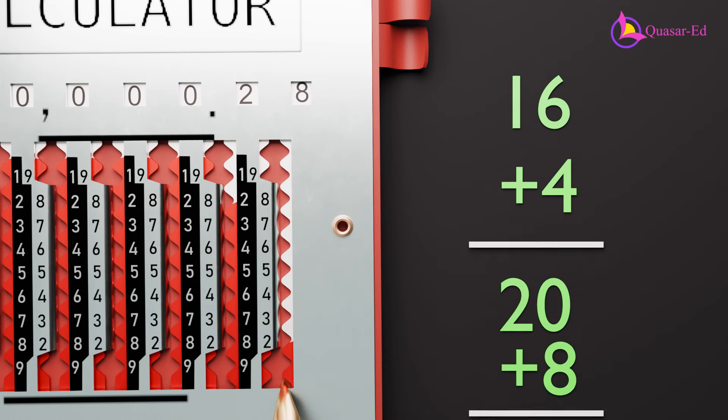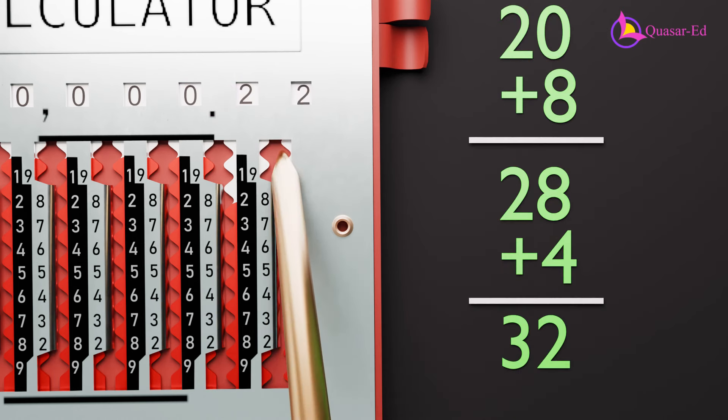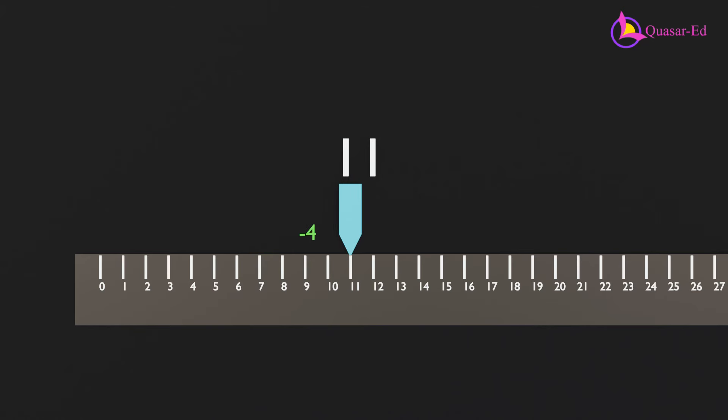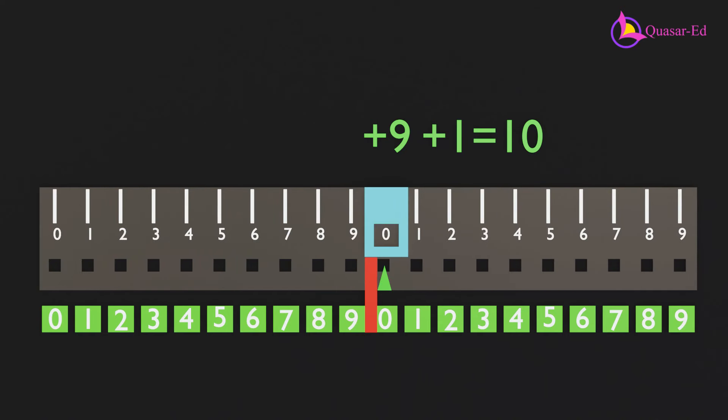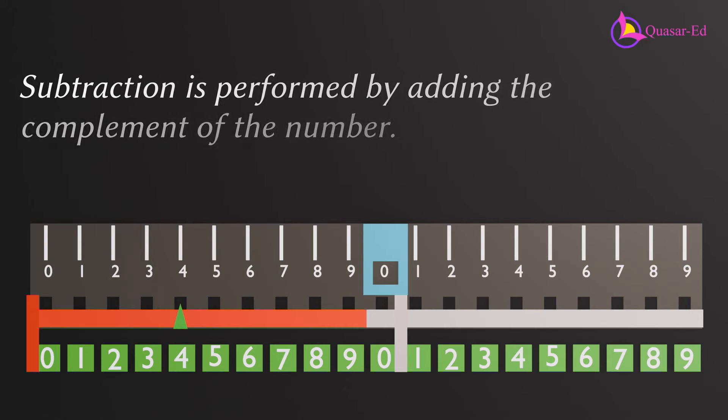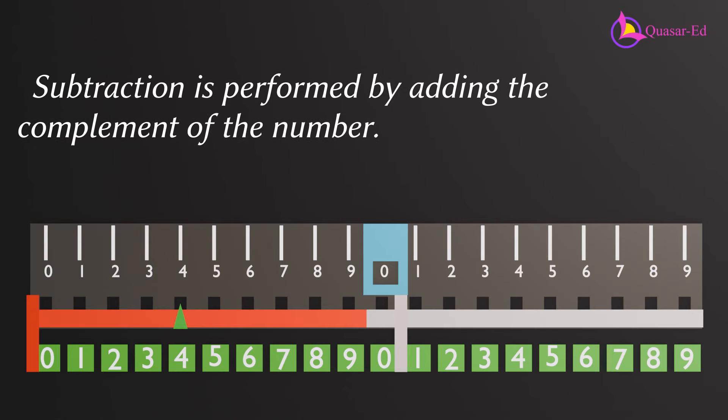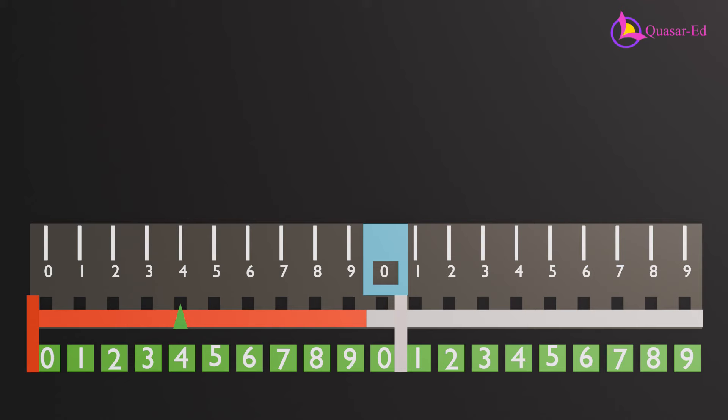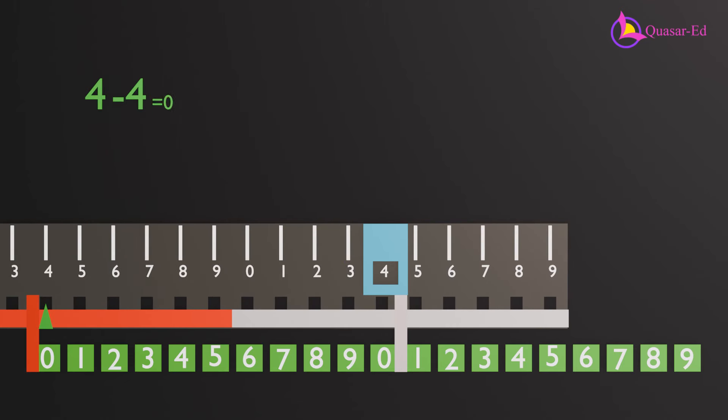For subtraction, we can no longer use backward counting techniques like in the first infinite ruler example, due to the backward movement used in addition. In systems like this and other mechanical calculators, subtraction is performed by adding the complement of the number.